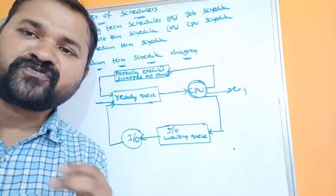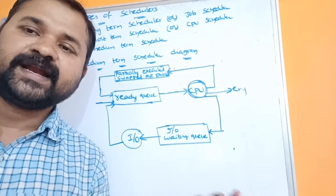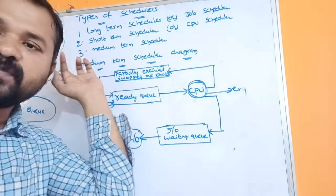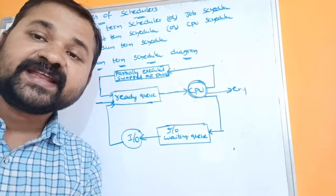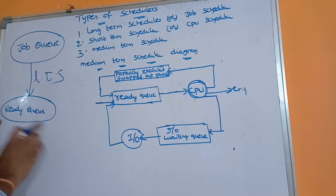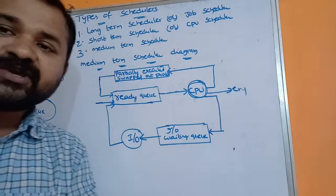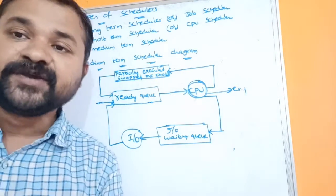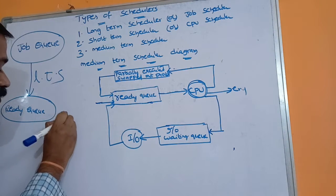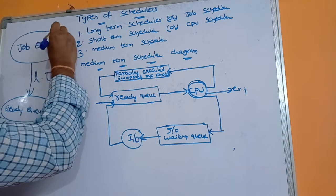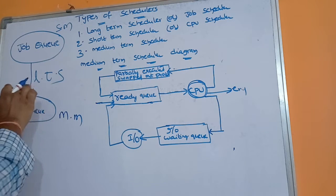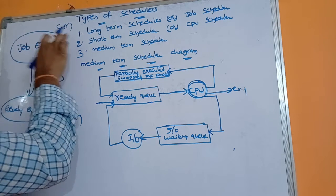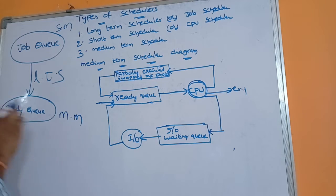Let a system contain 100 processes. The job queue resides in secondary memory such as a hard disk. In main memory we have a queue called the ready queue, which contains a list of processes that are ready for execution by the CPU. So the task of the long-term scheduler is to load a process from the job queue in secondary memory to the ready queue in main memory.